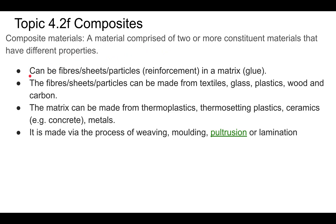Composite materials are made out of a couple things. They're made out of either fibers, sheets, or particles that are reinforced with some sort of binding agent, matrix, or glue. The fibers and sheets could be textile — for instance, Kevlar, which we'll talk about in a few minutes, is a type of plastic textile. It can be made out of glass like fiberglass, wood, or carbon fibers. The matrix is usually made out of thermoplastics or thermosetting plastics, ceramics, or metals.